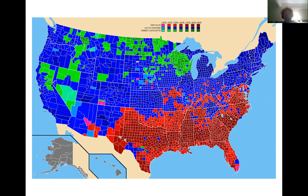The La Follette campaign really shows the limits in an electoral college system of an effective third party candidate. Here you had a high-profile Senator running against really the weakest Democratic nominee, maybe in the 20th century. And even then he wasn't able to convince anti-Coolidge voters to support him because of the fear of throwing your vote away by voting for a third party candidate in the electoral college. That's our second snippet for this week.